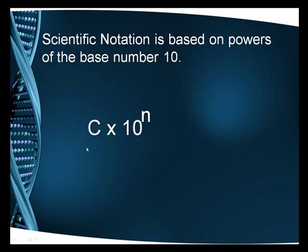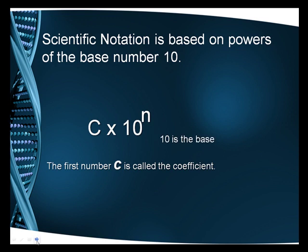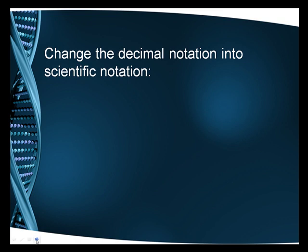Scientific notation is written as a number, just one number, times 10 to the n. The c is called the coefficient. 10 is your base and that's the same for any exponential function. And n is your exponent. And that tells us how many places we are going to move to the left or to the right.